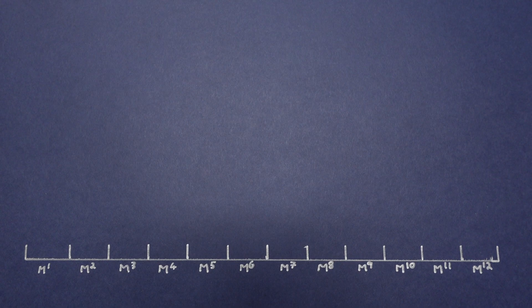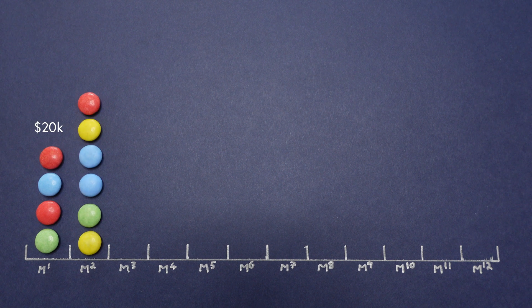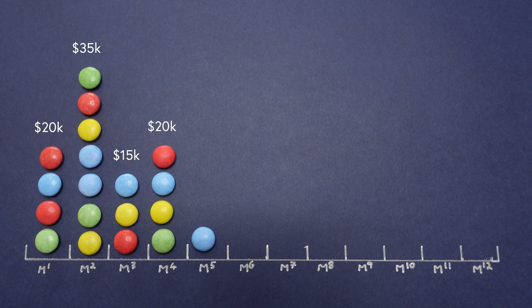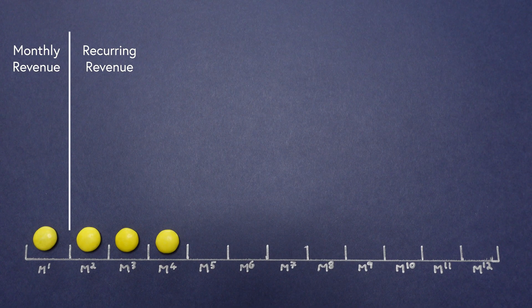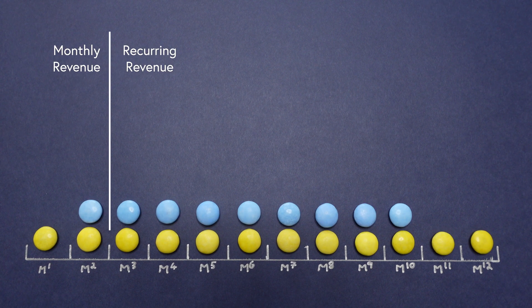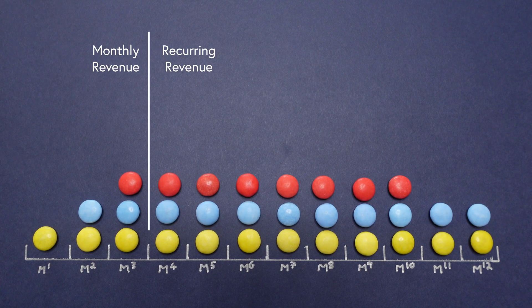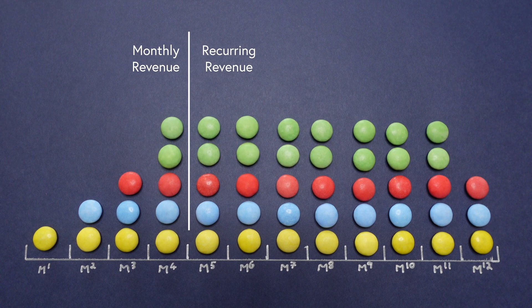Before we look at MRR and ARR, let's first take a look at what we mean by recurring revenue. Traditionally, a business generates revenue by making individual sales, so if you want to report on your revenue, you just need to look back at the value of the sales you've already made. The difference with subscription businesses is that your customers aren't making one-off purchases — they're agreeing to pay you a fixed amount every month or every year. We call this recurring revenue because we expect it to repeat, at least until that customer cancels their subscription.